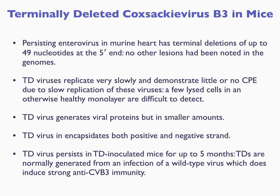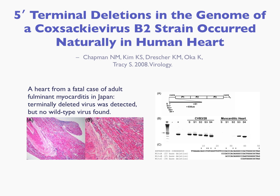A very interesting finding was that if you inoculated mice with these very defective viruses IP, it would go to the heart and persist for up to five months. When you generate terminally deleted viruses in these mice by inoculation of wild type virus, the persistent infection is seen in immunocompetent mice despite their having a strong anti-CVB3 immunity. We also found this in human beings. We were very lucky to have a collaboration with Dr. Oka in Japan who had a case of fulminant myocarditis with an extremely high titer of virus in the heart. We were able to show that despite the fact that this patient died only 14 days after admission to the hospital, he already had no wild type virus at the 5' end — it was all terminally deleted.